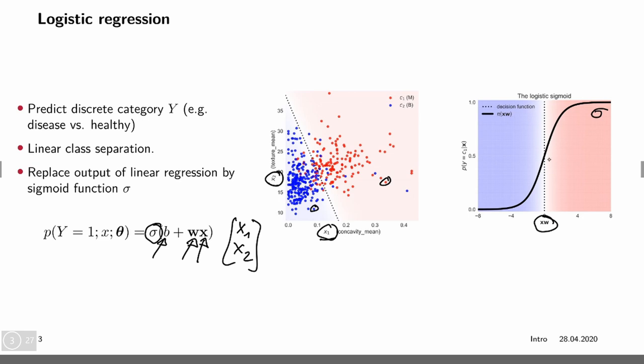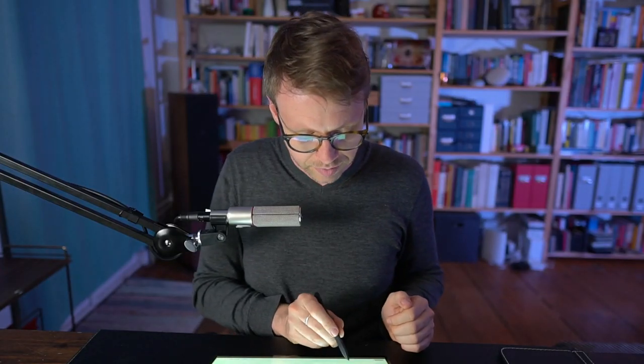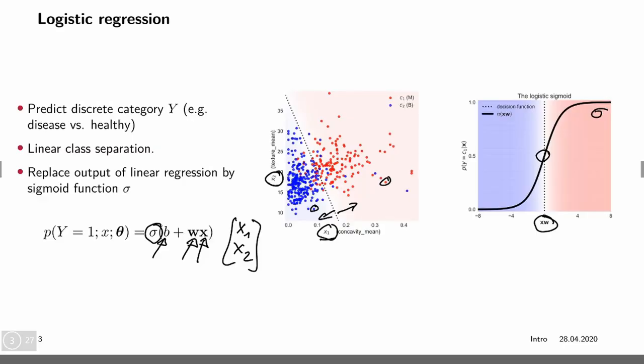The value 0.5, where the two probabilities are the same, is exactly where this line would go. Everything on this side has probability larger than 0.5 and everything on this side has probability smaller than 0.5. However, this model is still linear. It uses the sigmoid function but still does linear classification.